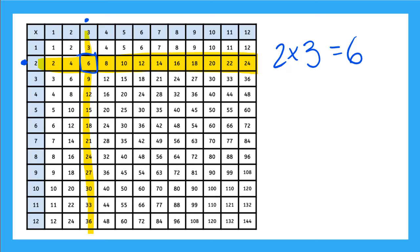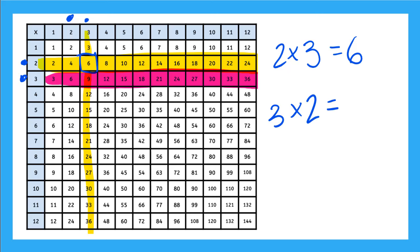Now what if I needed to find 3 times 2? Well, the first thing I'm going to do is find 3 over here on the side and I'm going to highlight across. Then I'm going to find 2 up here at the top and I'm going to highlight down. And where those two pink lines intersect is my answer, which is also 6.